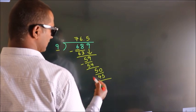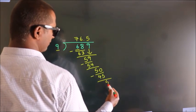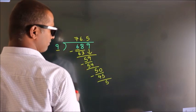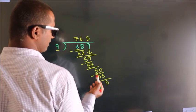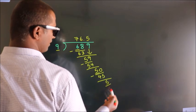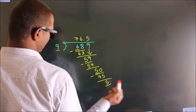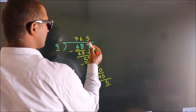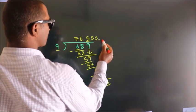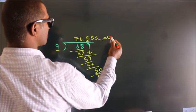Now we subtract, we get 5. Now you observe, we had 5 here and we got 5 again. That means this number will keep on repeating. So this is our quotient.